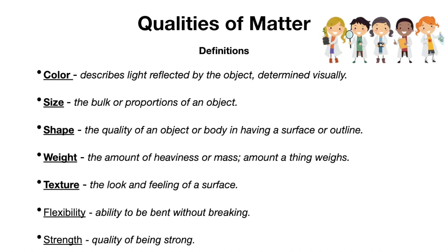Color — we can all see color, most of us. Even if you're colorblind, you can see some colors. Color describes the light reflected by the object, determined visually. That is a fancy way of saying if you look at a green crayon, that is the way light reflects off of it, and it's green because of light. So we can just say that the color is green.